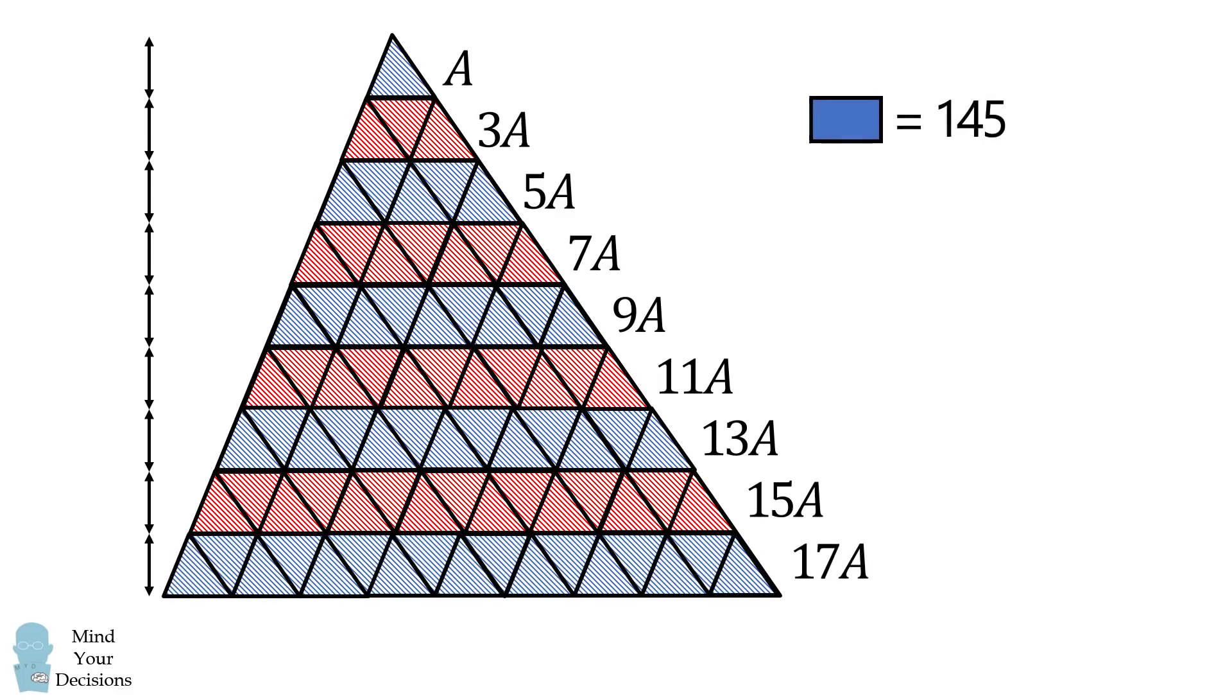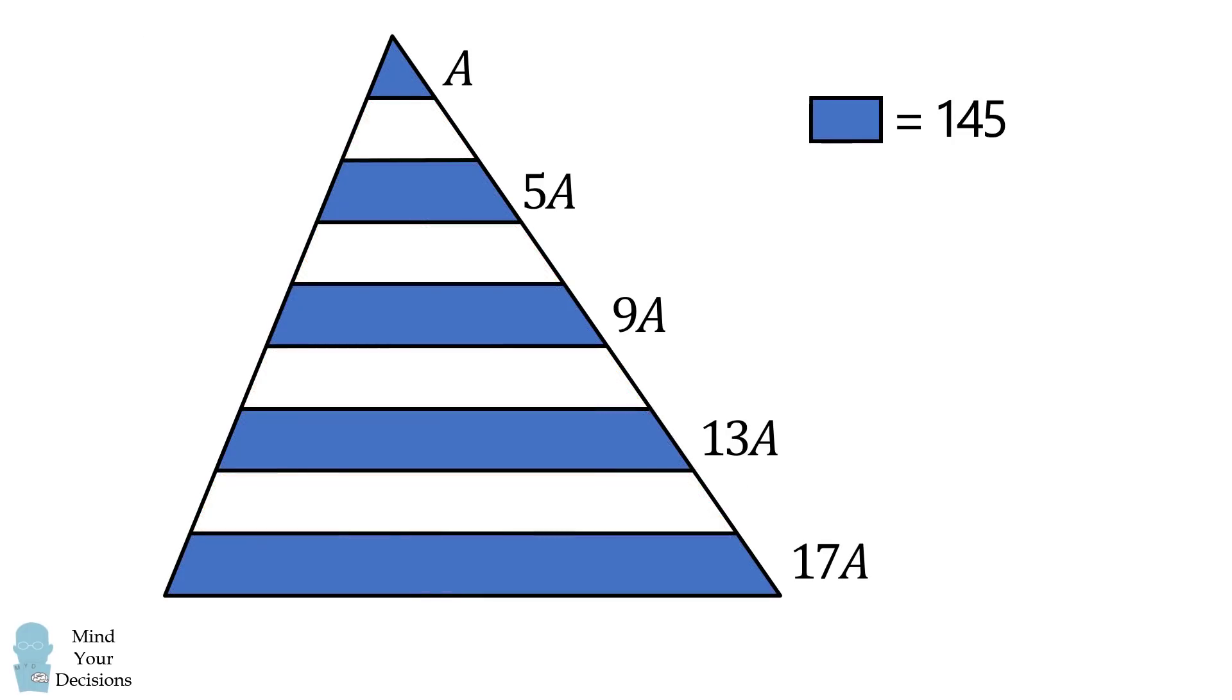Let's now just focus on the blue stripes. We know that the total area will be equal to 145. The total area of these blue stripes will be equal to A plus 5A plus 9A plus 13A plus 17A, and that's equal to 45A. Thus we get A is equal to 145 over 45, which is equal to 29 over 9.